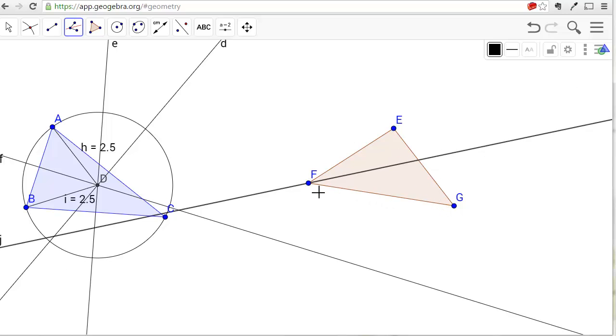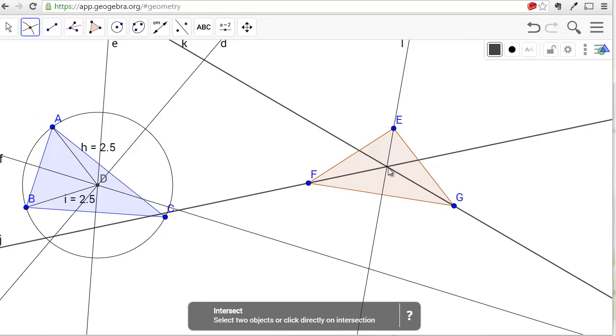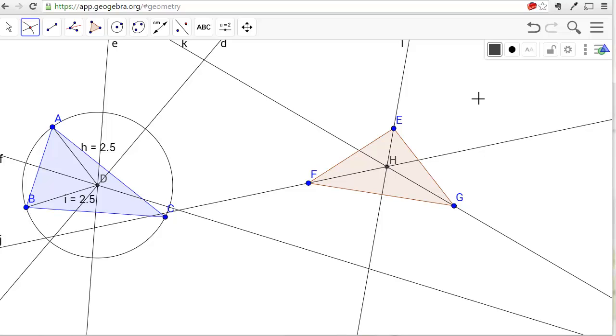So one angle bisector, two angle bisectors, three angle bisectors. Now we'll find the point of intersection. There's our point of concurrency for the three angle bisectors.